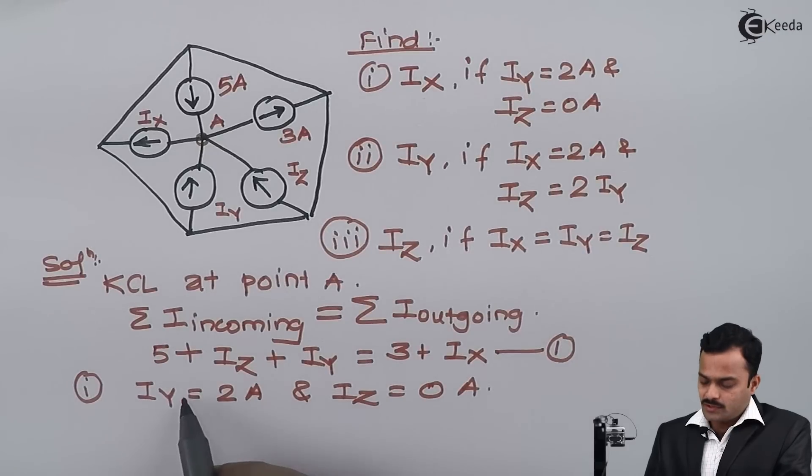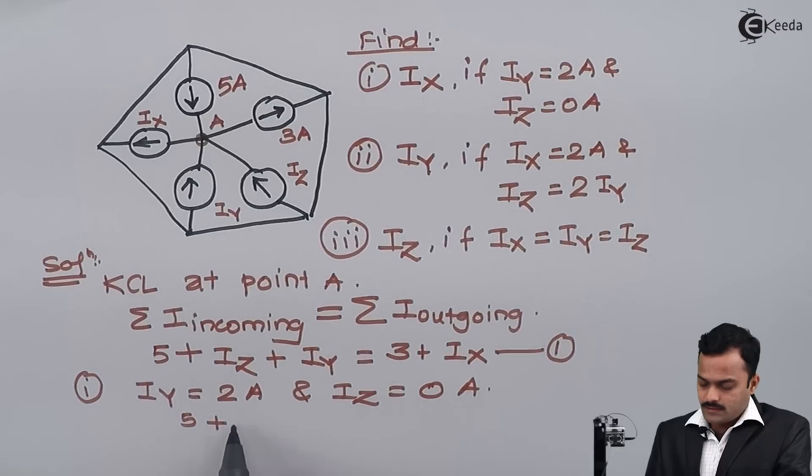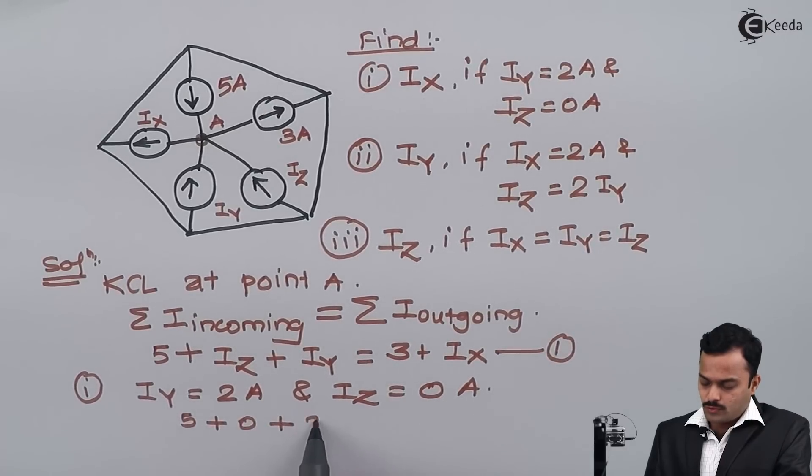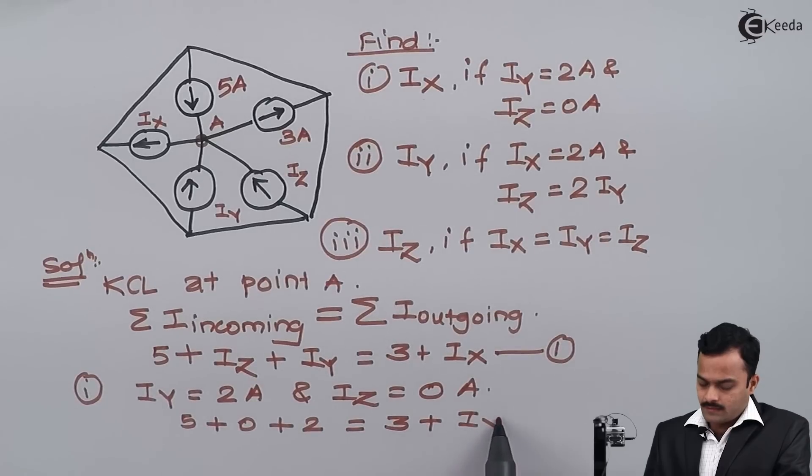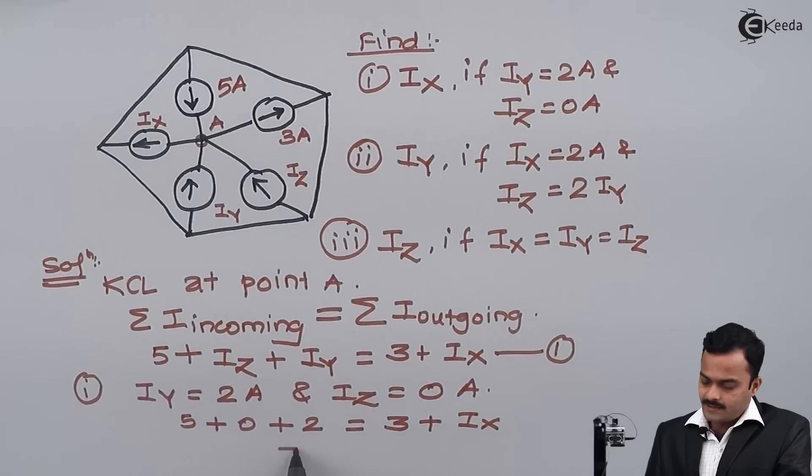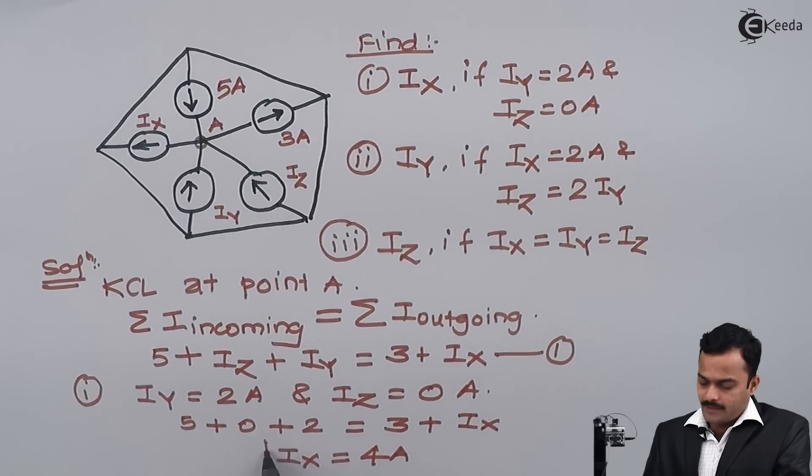So I substitute iy and iz. I will get 5 plus 0 plus 2 equals 3 plus ix. So it's a simple calculation and I will get value of ix as 4 ampere.